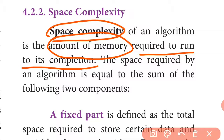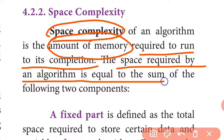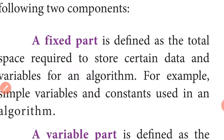The space required by an algorithm is equal to the sum of the following two components: the fixed part and the variable part. These two components are important in understanding space complexity.